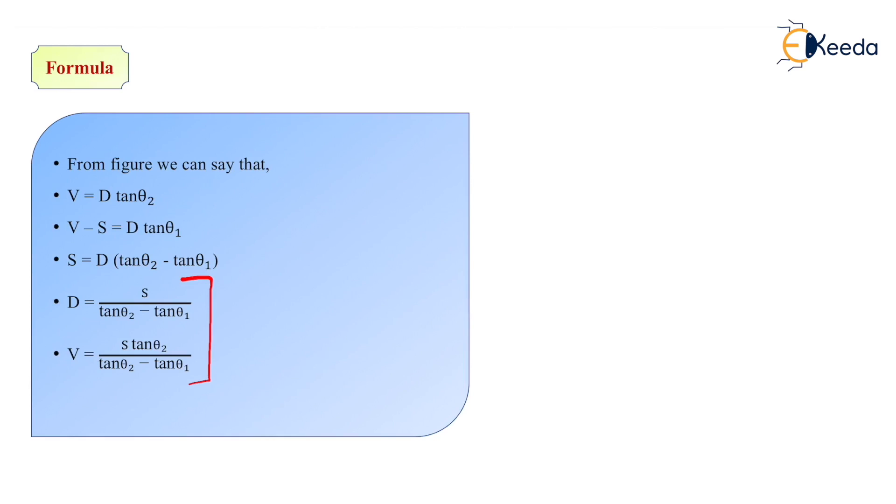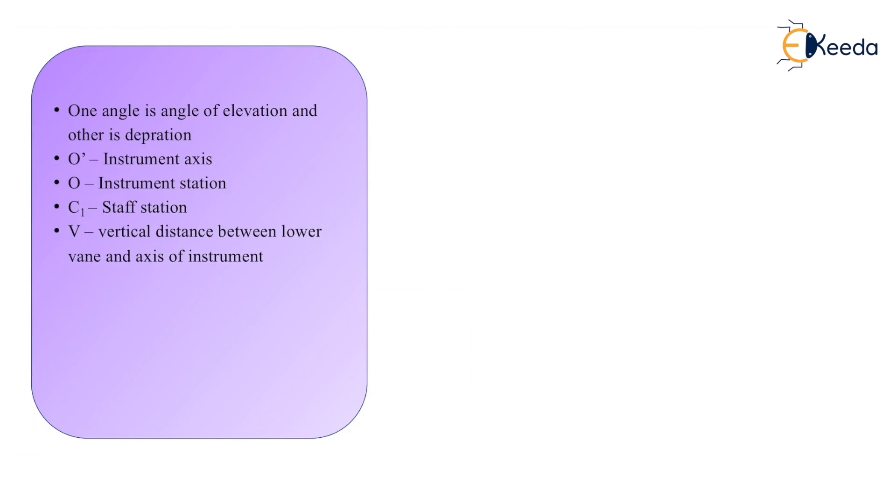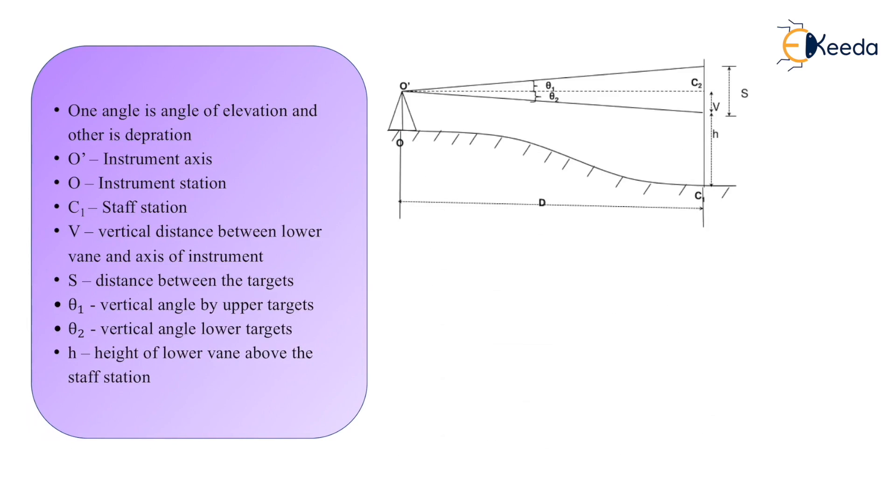We come to the conclusion of formulas for D and V. We have two formulas to calculate horizontal and vertical distances. By knowing vertical distances, we can find out RL of any point, because we know RL of instrument station. So RL of point B1 will be RL of A minus V minus H.